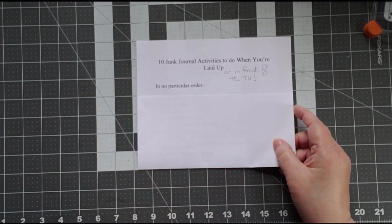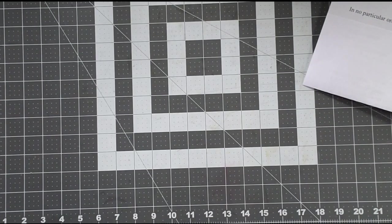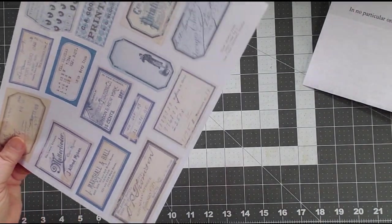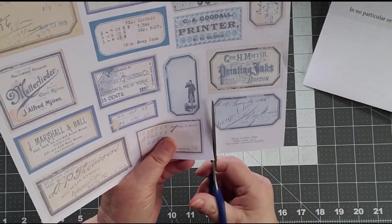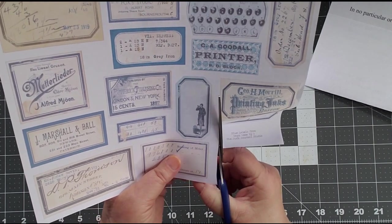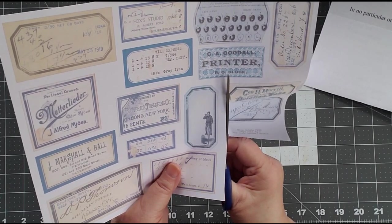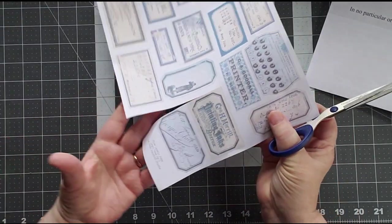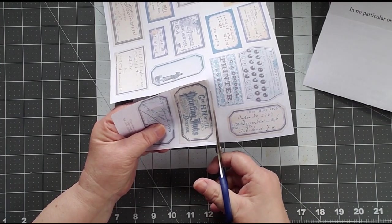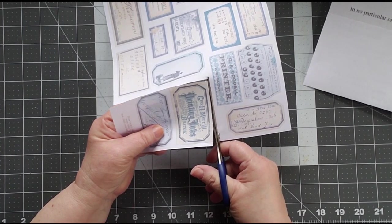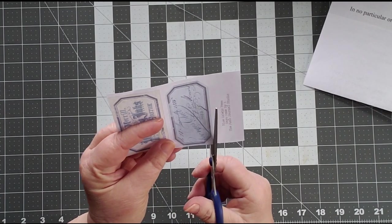So we're going to talk about junk journals and what you can do with the junk journal. So the first thing up is fussy cutting. You can easily fussy cut pretty much anything that you need to do while you're sitting in front of the TV. If you're laid up and you're on some very pleasant painkillers, you might want to wait on this one until you're not quite so feeling good, shall we say.